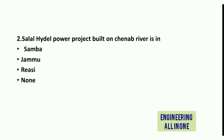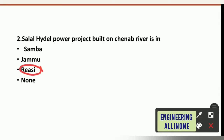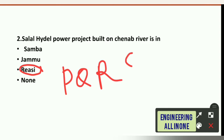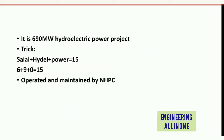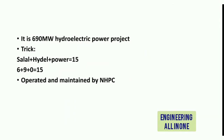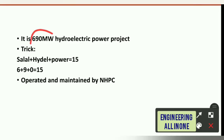Question 2: Salal Hydel power project is built on the Chinab river. In which district is it located? Options are: Samba, Jammu, Riyasi, or none. The right answer is option C: Riyasi. To remember this, alphabetically R comes before S — R stands for Riyasi, and S stands for Salal Hydel power project.